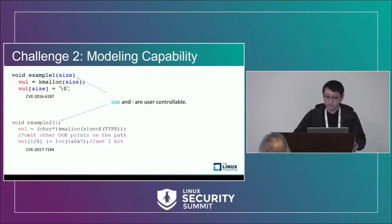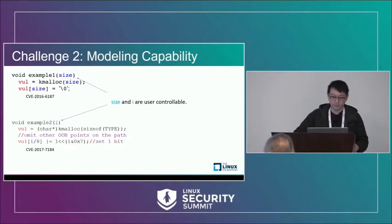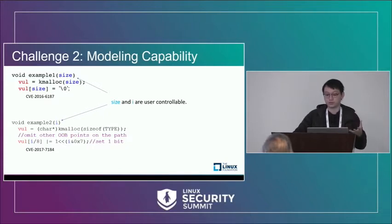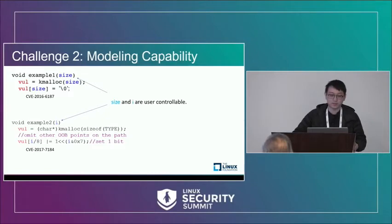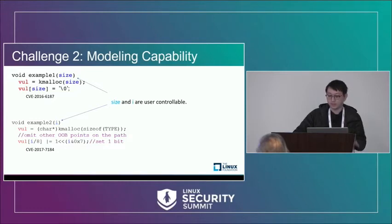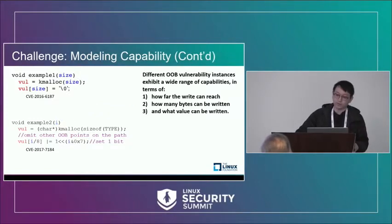Here are some more examples about out-of-bound write vulnerabilities. The first one is from CVE-2016-6187 — it's basically an off-by-one bug, and it only allows us to override one byte with the value zero. But the size of the vulnerable object is from user input, which is controllable by the attacker. The bottom one is from CVE-2017-7184. Although the size of the vulnerable object is fixed and the attacker can only set one bit, the offset of the overwritten address is controllable, and the bug can be triggered multiple times. As we can see, the capability of those overflows varies significantly.